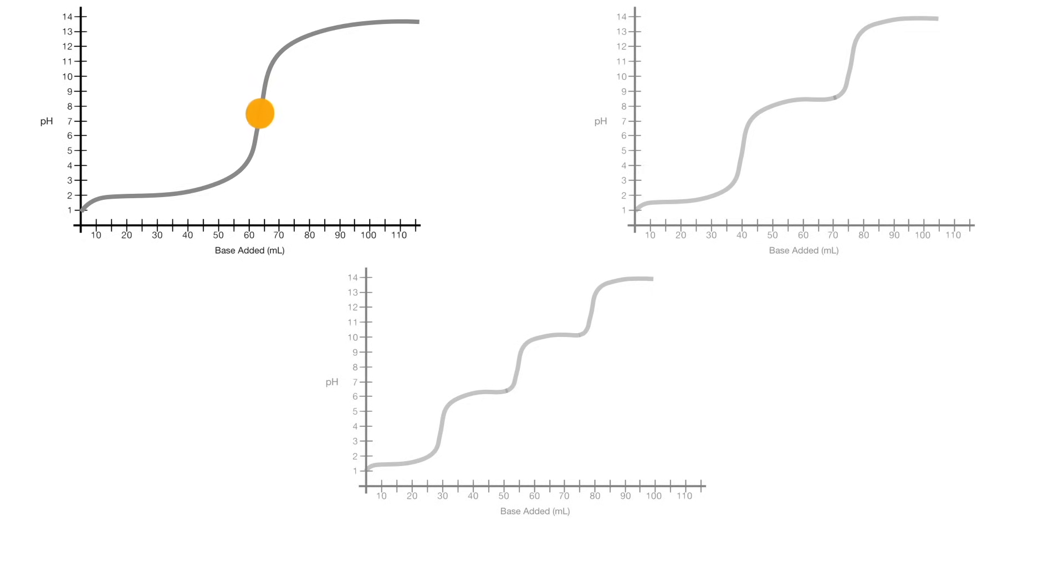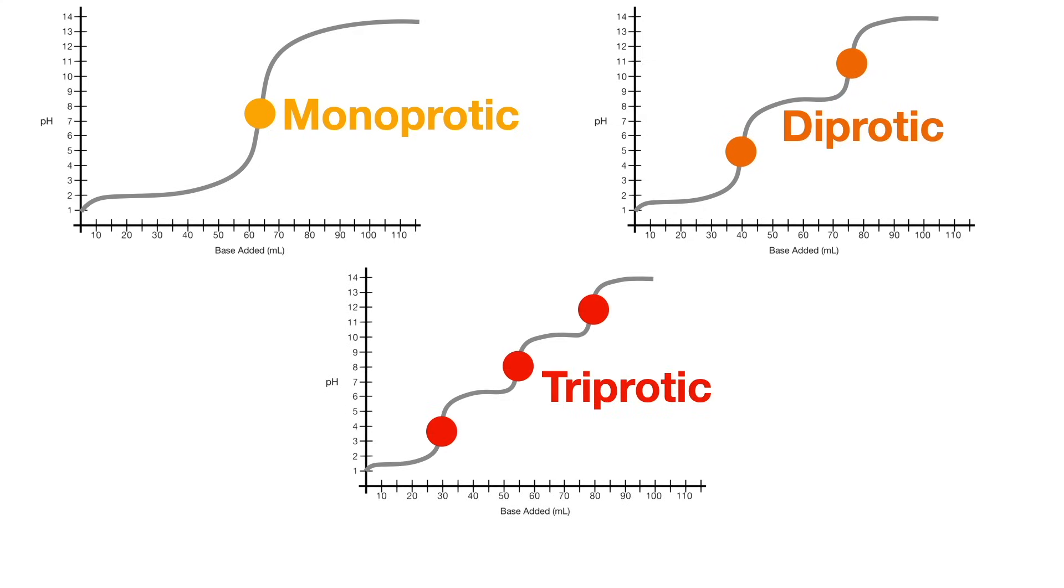One equivalence point means monoprotic, two equivalence points means diprotic, three equivalence points means triprotic. So, that's it, simple as that.